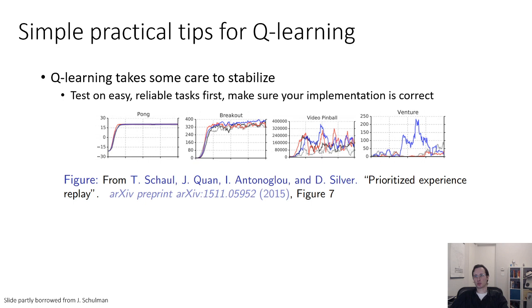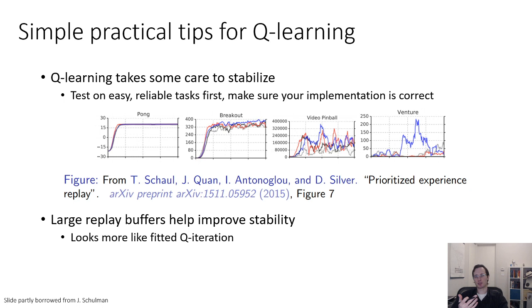Here are some actual examples of learning curves where the x-axis is the number of samples and the vertical axis is the actual performance of the policy for some Atari games from a paper from 2015. You can see that some of the games like Pong, which is really easy, go up and then stay up, but some other games keep going up and down and oscillating. So it's very important to debug your algorithm on really simple tasks to make sure it's correct before trying it on harder tasks. Large replay buffers tend to help improve the stability of Q learning, so don't be afraid to use replay buffers with as many as a million or more transitions. It basically makes it look more like fitted Q iteration. It addresses those correlated sample issues.